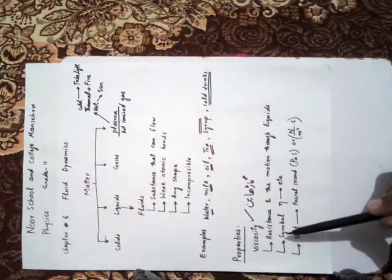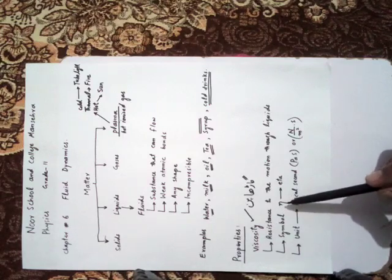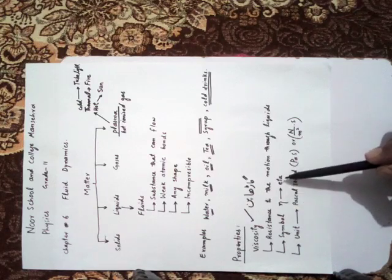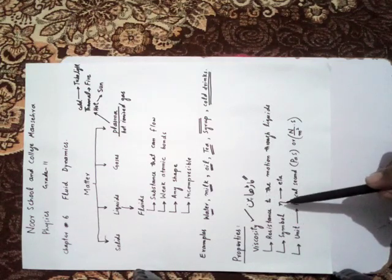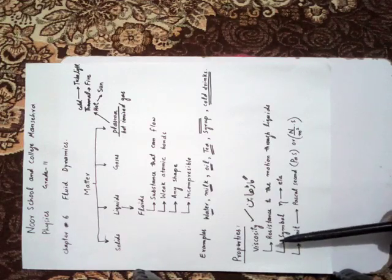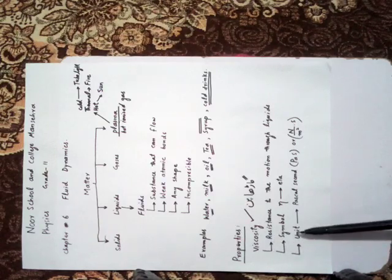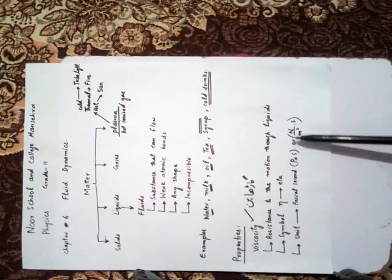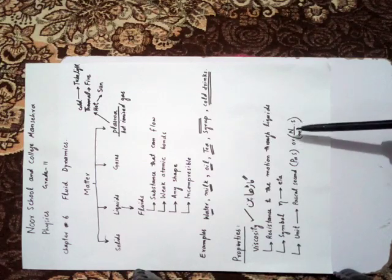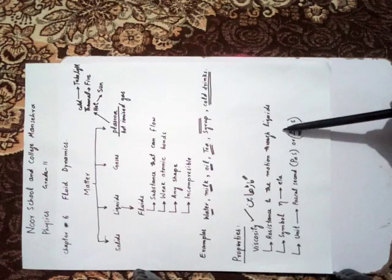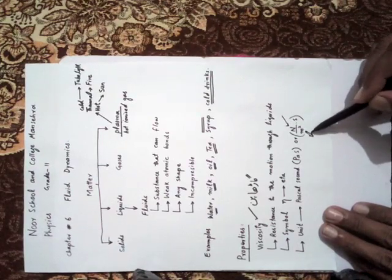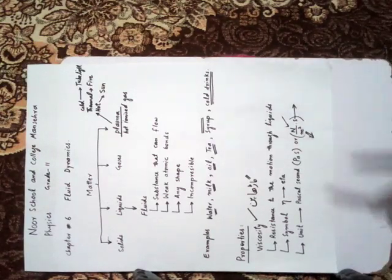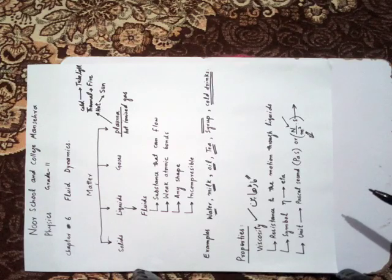So viscosity is defined as the resistance offered to the motion of an object through a liquid. The symbol of viscosity is eta (η), named from the Greek language. The unit of viscosity is Newton per meter squared into second (N·s/m²). Viscosity depends on three factors: force, area (in meter squared), and how long we are moving something through a liquid.